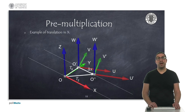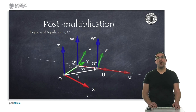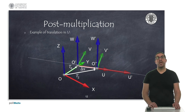To finish, we will see some examples that allow you to visualize the implications of different translations and rotation operations. In the first example, we see the result of applying a translation with respect to X, obtaining the reference frame O'U'V'W'. On the other hand, if the translation is made with respect to the U-axis — the X-axis of the mobile reference frame — we obtain a different translation. In this case, we must perform a post-multiplication translation.